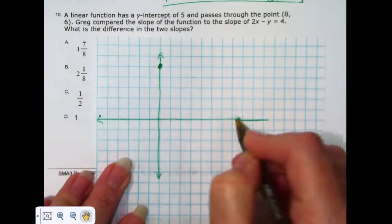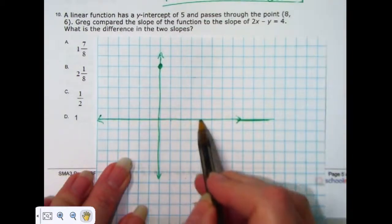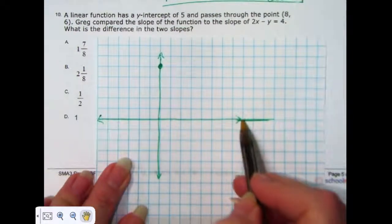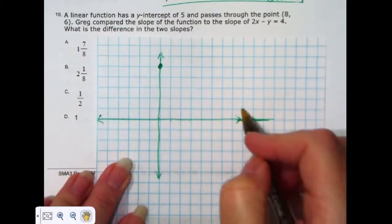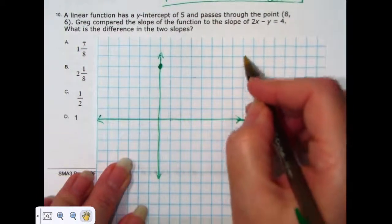And I'm like, well, I didn't quite get it long enough. I have 1, 2, 3, 4, 5, 6, 7, 8. And up 6. 1, 2, 3, 4, 5, 6.